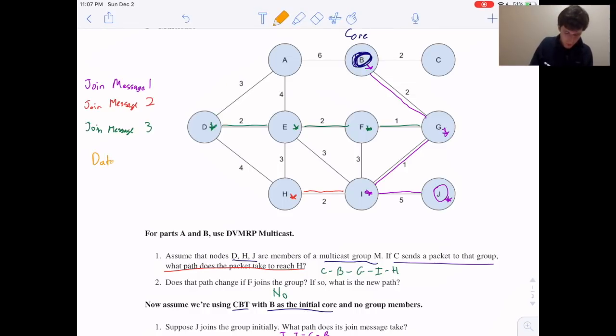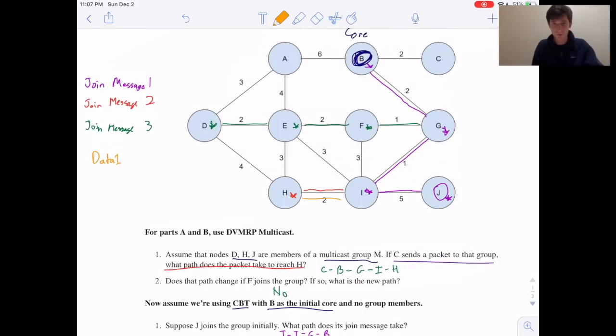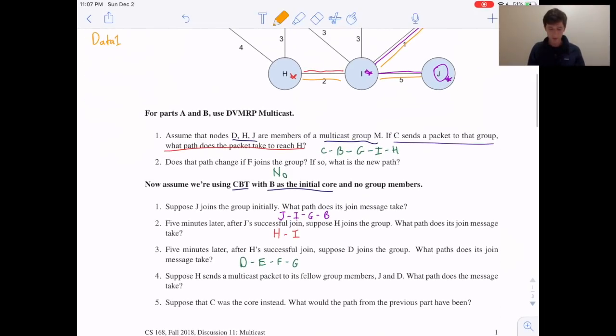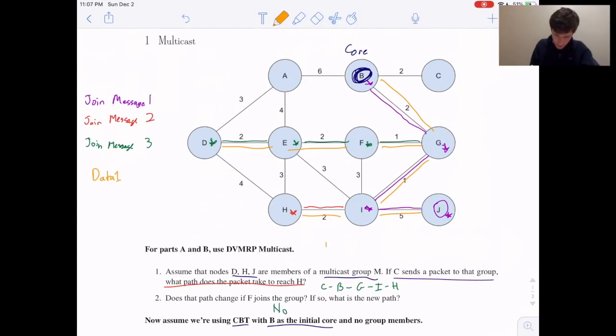We'll call this data1. So H wants to send to all the members of the group. H floods, sends on all of the links that are part of the group. I does the same, G does the same, F does the same, E does the same. And so the path that our packet takes looks a little bit like this. So H, I, G, F, E, D, except that at I the packet splits off and also goes to J, and at G the packet splits off and also goes to B. So at I and G it gets duplicated.